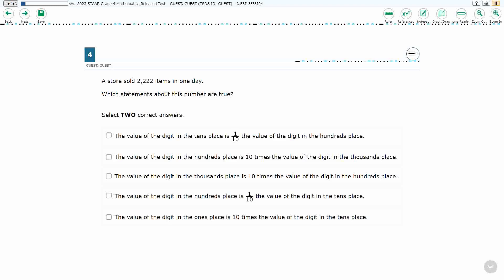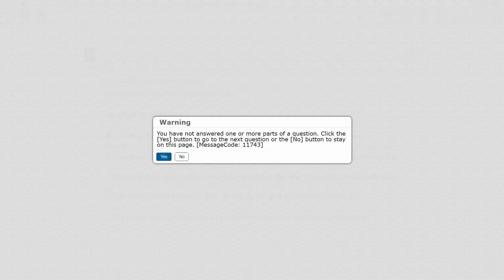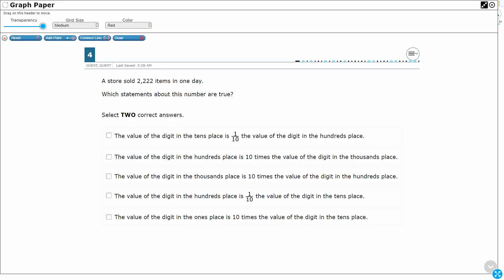So we have to choose two correct answers here. Let's make sure we understand how it works. If I try to answer just one and then move on, it is going to give me a warning saying you have not answered everything. Two points, so if we want both points to get full credit, we need to get both of these correct.